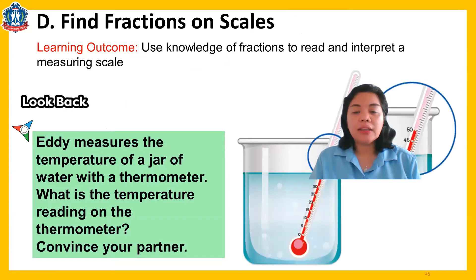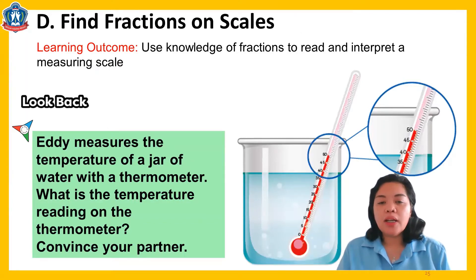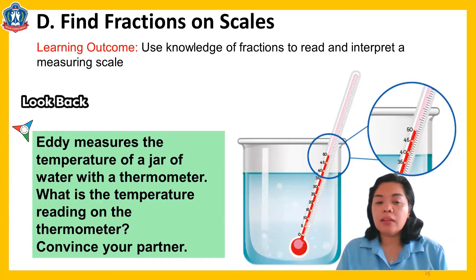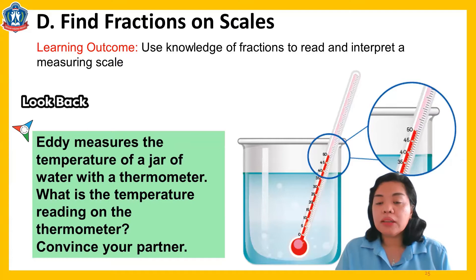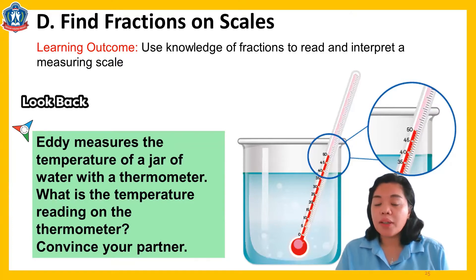Let's start with lesson 4. We have find fractions on scales. Look here — I have a picture of a thermometer on a jar. Eddie measures the temperature of a jar of water with a thermometer. What is the temperature reading on the thermometer? Look at the red liquid — it raised to 50. So therefore, the temperature of this jar of water is 50 degrees Celsius.